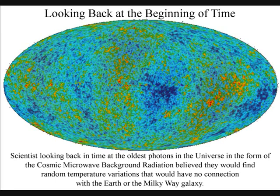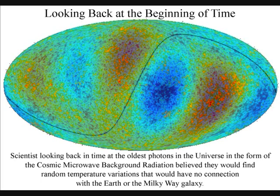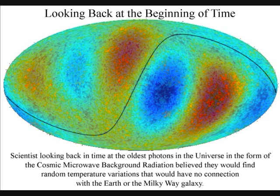Scientists looking back in time at the oldest photons in the universe, in the form of the light from the cosmic microwave background radiation, believed they would find random temperature variations that would have no connection with the Earth or the Milky Way galaxy.